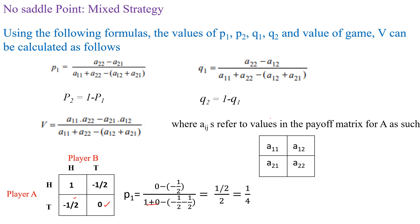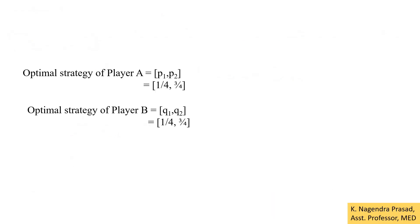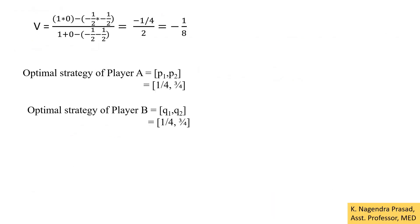Similarly, substituting into the Q1 formula: Q1 = (A22 − A12) / (A11 + A22 − A12 − A21) = (0 − (−1/2)) / (1 + 0 − (−1/2) − (−1/2)) = 1/4. Since P2 = 1 − P1, with P1 = 1/4, we get P2 = 3/4. Similarly, Q2 = 3/4. Substituting values into the game value formula gives the value of the game V = −1/8.